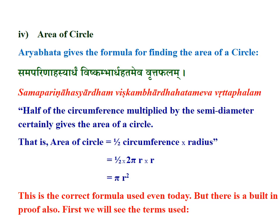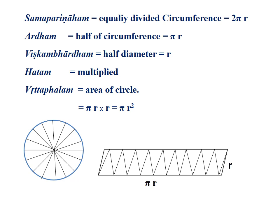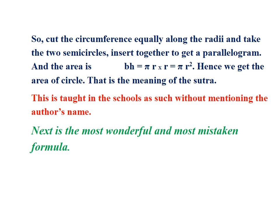There is also a built-in proof. Samapariṇaham means equally divided circumference, i.e., 2πr. Ardham means half of circumference, i.e., πr. Viṣkambhārdham means half diameter, i.e., radius r. Hatam means multiplied. Vṛttaphalam means area of circle, equal to πr·r = πr². From the figure, the circle is divided equally; the two semi-circles are put together to form a parallelogram. The area of the parallelogram is base × height = πr × r = πr². Hence, cutting the circumference equally along the radii and inserting the two semi-circles together gives a parallelogram with area πr².